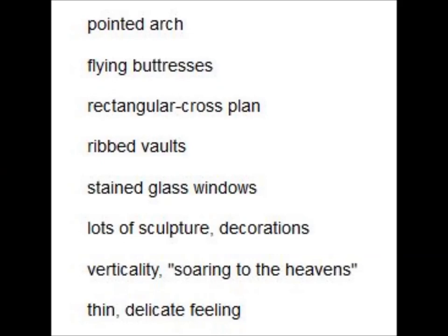What to look for in a Gothic cathedral: pointed arch, flying buttresses, rectangular cross plan, rib vaults, stained glass windows, lots of sculpture and decoration, verticality soaring to the heavens, and a thin, delicate feeling. For more information on Romanesque and Gothic architecture, visit the reference website provided.